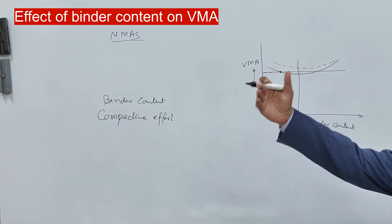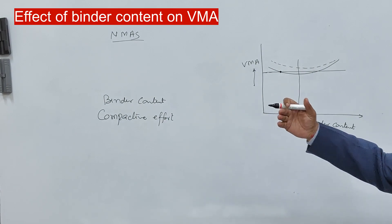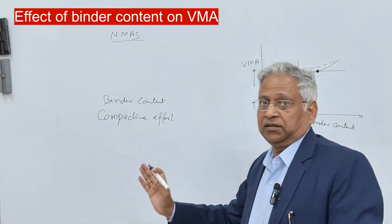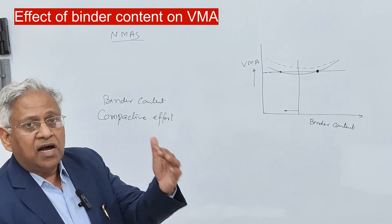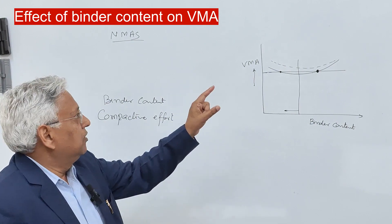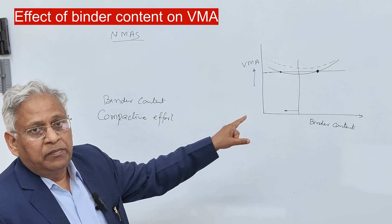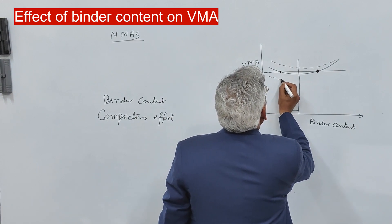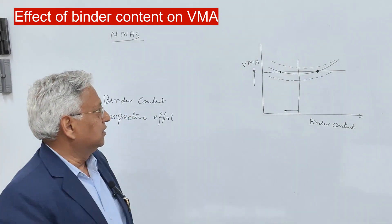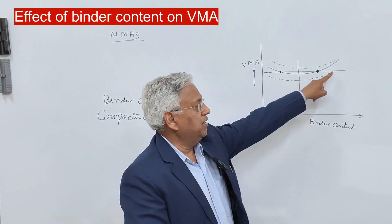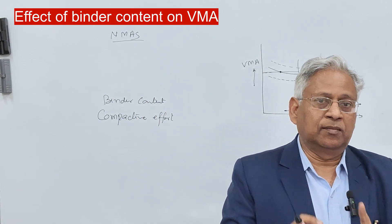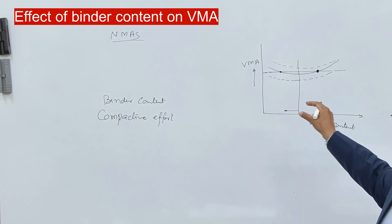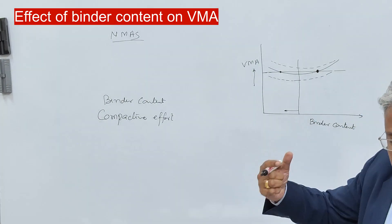At that dry-side binder content, air voids will be high. At the same time, you should also not select a binder content on the wet side of optimum, because that will indicate a higher value of binder and the mix will bleed under hot summer and become plastic. A third situation is when your VMA versus binder content graph is completely below the desired VMA line — in that case, the mix formula cannot be achieved with the present aggregate, and even changing the gradation will not help; you must change the source of aggregate.